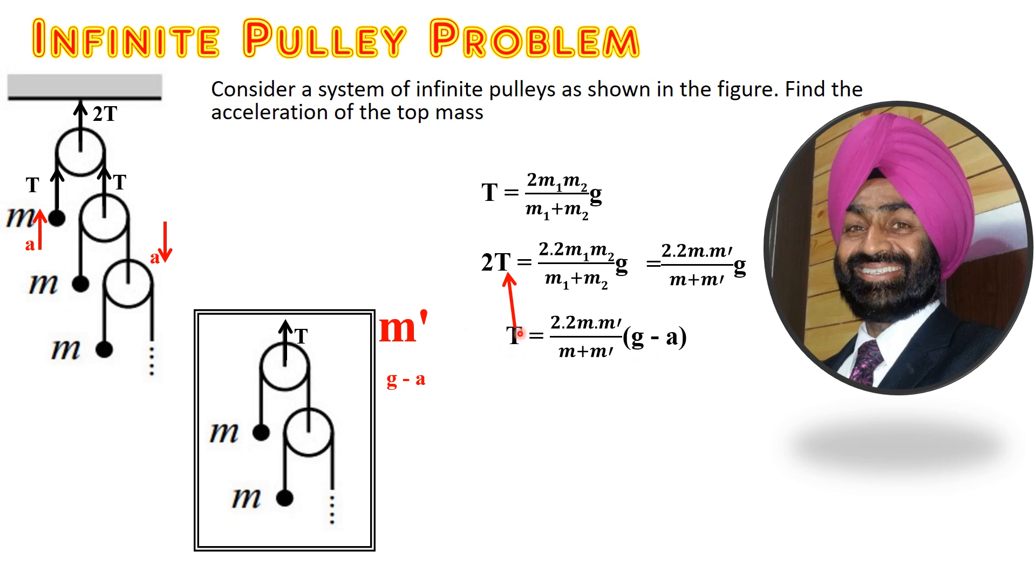Let us substitute this T and we'll get an expression. This term replaces T, so 2 times 2m times M dash. The sum of the masses is same on both sides, this cancels out. You write 2 times g minus a equals g. Expand the bracket: 2g minus 2a equals g. 2a on right hand side, g on left hand side, and you reach the answer, acceleration equals g by 2.